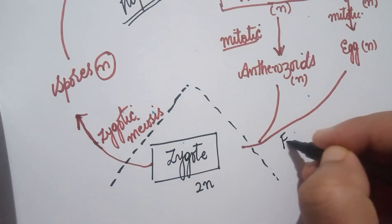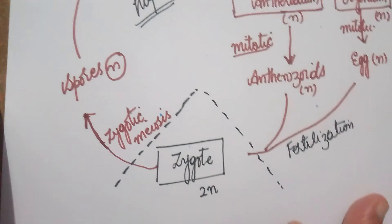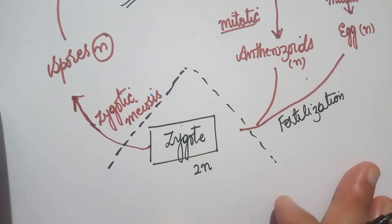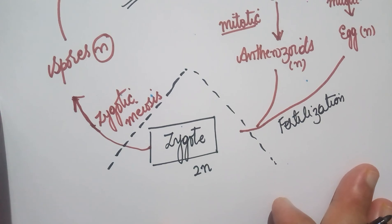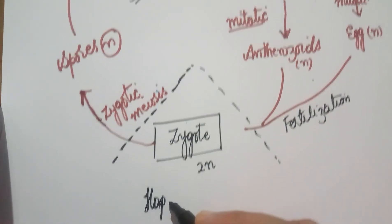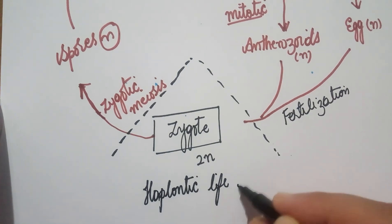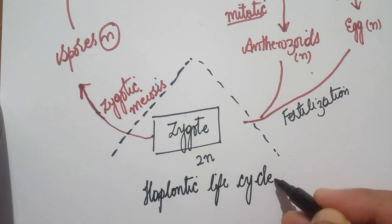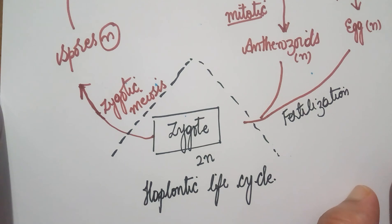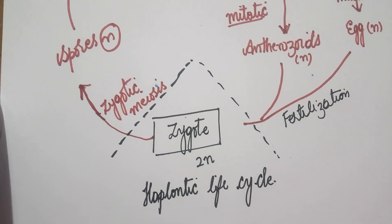This fusion step is fertilization. Because the entire life cycle is predominantly dominated by haploid phases, the life cycle is called the haplontic life cycle. We call it haplontic because the predominant stages are haploid stages. Thank you, and I'll see you in the next video on life cycles.